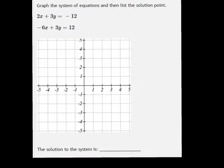The first one we had was 0, negative 4 and negative 3, negative 2. And I'll graph the other line in a different color. That was 0, 4 and negative 2, 0.